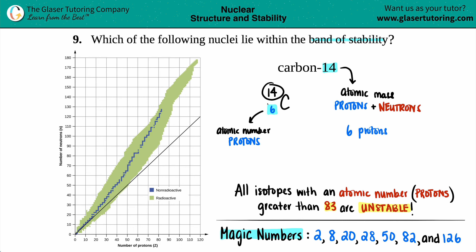Now the question is how many neutrons do I have. If I have 14 total protons and neutrons and 6 protons, I just subtract: 14 minus 6 equals 8. So that tells me I have 8 neutrons.